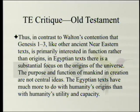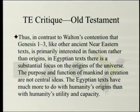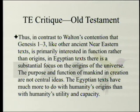Thus, in contrast to Walton's contention that Genesis 1-3, like other ancient Near Eastern texts, is primarily interested in function rather than origins, in Egyptian texts there is a substantial focus on the origin of the universe. The purpose and function of mankind in creation are not central ideas. The Egyptian texts have much more to do with humanity's origins than with humanity's utility and capacity. What Walton is really saying is Egyptian texts don't count — the Mesopotamian ones are the ones that count. Well, what about the Mesopotamian ones?